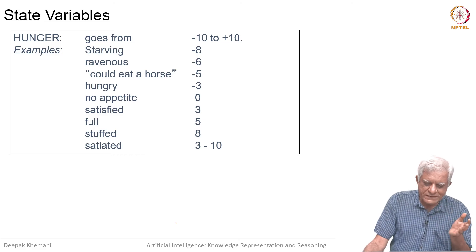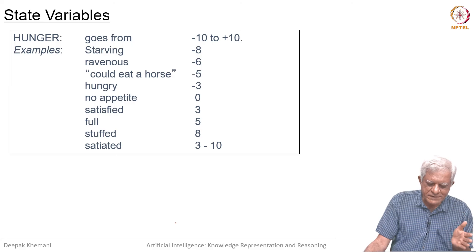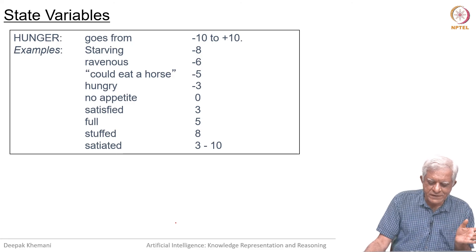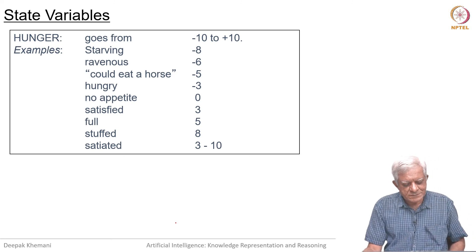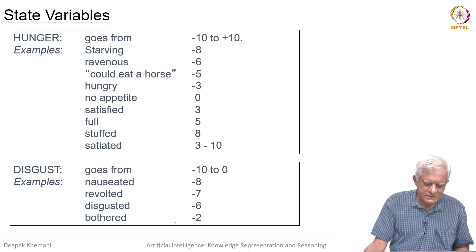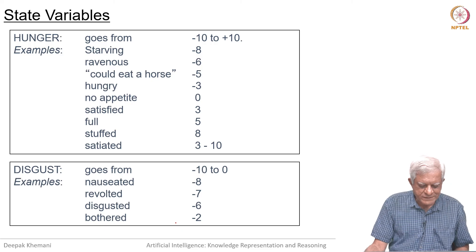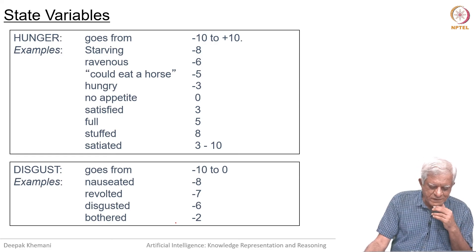Hunger goes from minus 10 to plus 10: starving, ravenous, could eat a horse, hungry, no appetite, satisfied, full, stuffed, satiated — depending on what your state is. Disgust is a negative emotion going from minus 10 to 0: nauseated, revolted, disgusted, bothered, and so on.